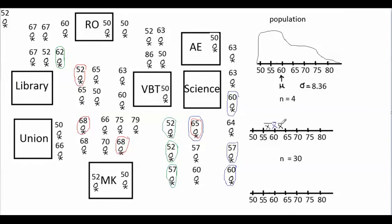Now that we understand sampling variability, I want to talk about the idea of a sampling distribution. When you're taking a sample from a population, the sampling distribution is the collection of all possible outcomes that could be found. Each of those possible samples of four people would have its own sample mean.